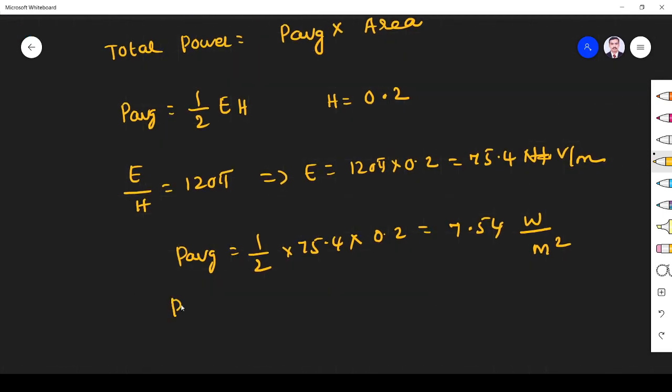P total is given by average power 7.54 times area of the circular disk. It is a circular disk where the power flows. So pi into r squared. R is 5 centimeters, so 5 into 10 power minus 2 meters, whole square. So it will give the answer of 0.059 watt or 59 milliwatts.